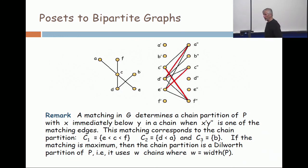So that's a maximum matching. Now, what we do with this maximum matching is we use it to assemble a chain partition. How do we do that? The rule is that when you have a matching edge that connects an X' with a Y', you put those two elements consecutively in a chain.